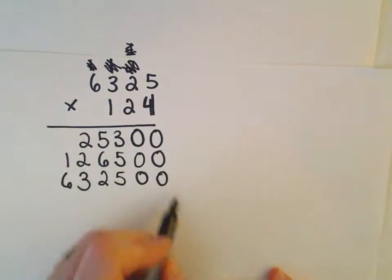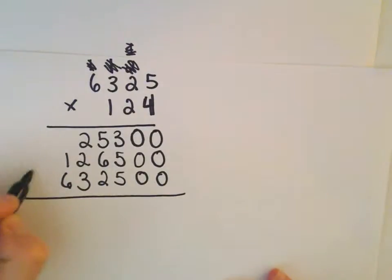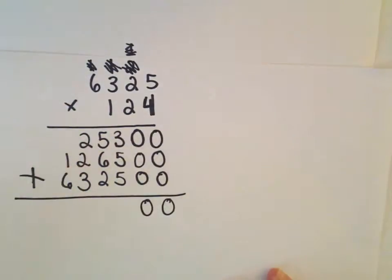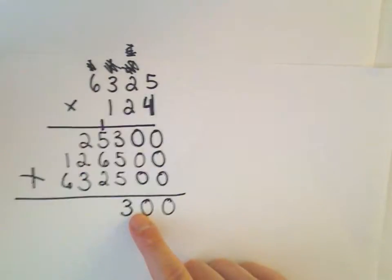I've now multiplied by every digit. Now we just add all of these numbers together. So 0 plus 0 plus 0, hey, that's 0. 0 plus 0 plus 0, hey, that's 0. We've got, let's see, 5 and 5 is 10, plus 3 is 13. So I'm going to keep the 3 and carry a 1 here.